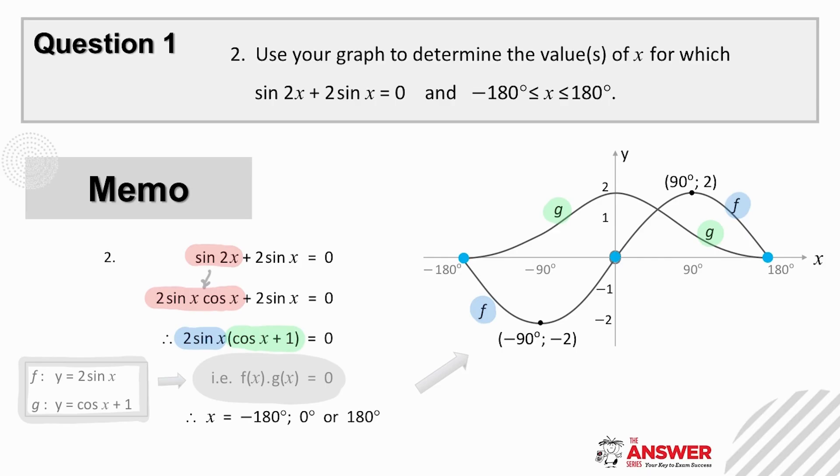From the sketch we can read off that f is zero at minus 180, zero and 180 degrees, and g is zero at minus 180 and 180 degrees. And so these are our three solutions to this equation over this interval.